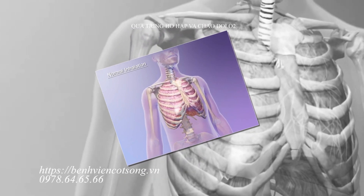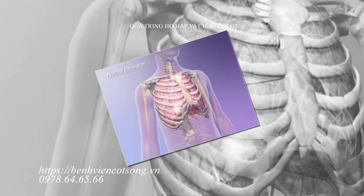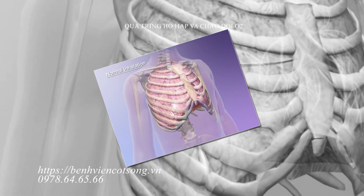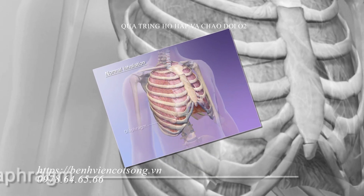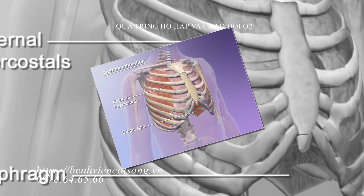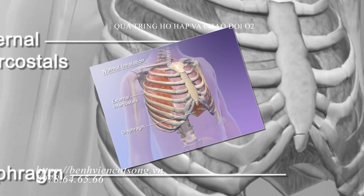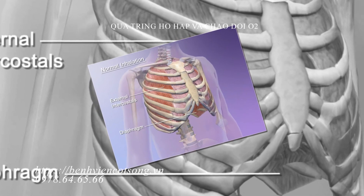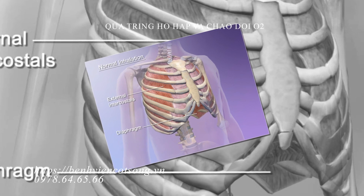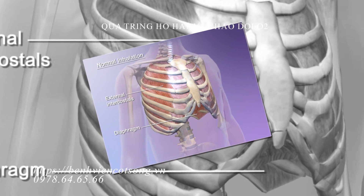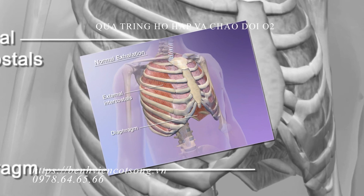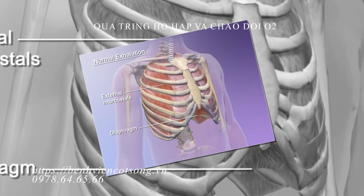Pulmonary ventilation, or breathing, is induced by changes in the volume of the lungs and the air pressure within them. During normal inhalation, the diaphragm and external intercostal muscles contract and the rib cage elevates. As the volume of the lungs increases, air pressure in the lungs drops below atmospheric pressure and air rushes in.